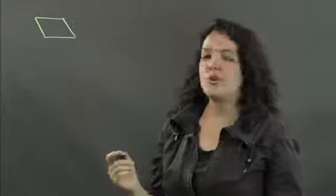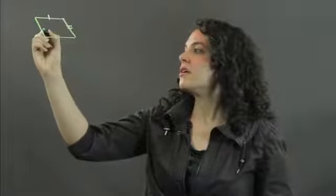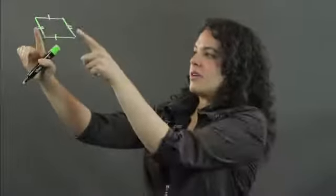First, if you have two pairs of opposite sides that are congruent, then you have a parallelogram.